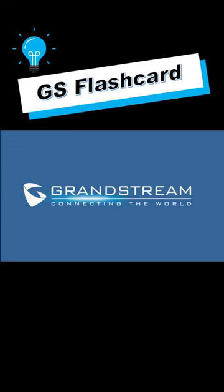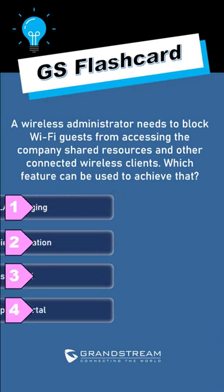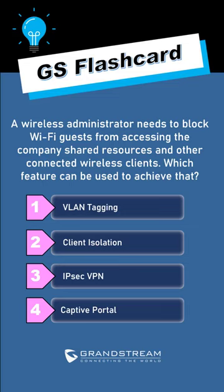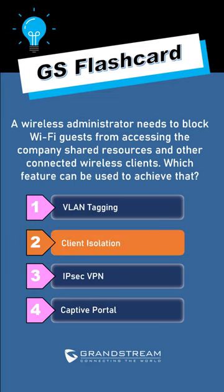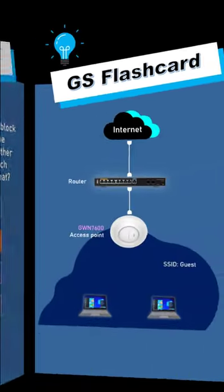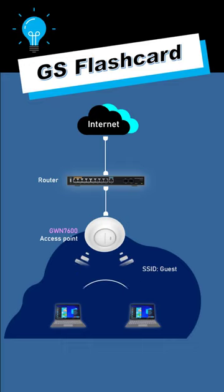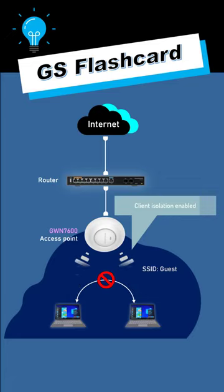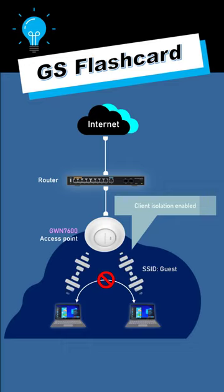Enabling client isolation on the GWN access points will prevent wireless clients from communicating with one another. When an SSID is configured with this security feature, wireless clients can only access the internet and will not be able to communicate with other devices in the same network.